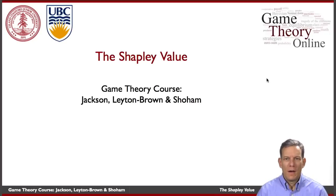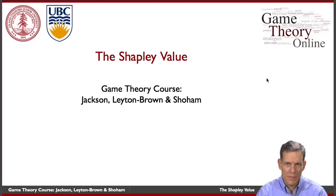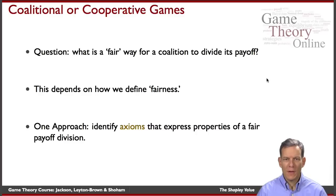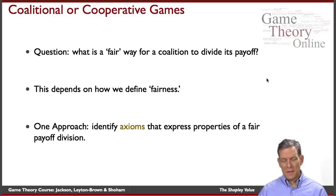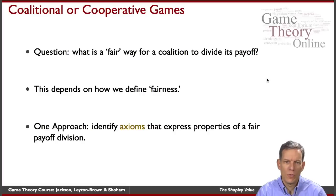Hi folks, this is Matt again. I'm going to tell you a little bit about the Shapley value, which is one of the most prominent ways of dividing up the productive value of some set of individuals among its members. The basic idea in coalition or cooperative games in terms of allocating value is having some notion of what the right — or even in quotes, the 'fair' — way is for a coalition to divide up its payoff.